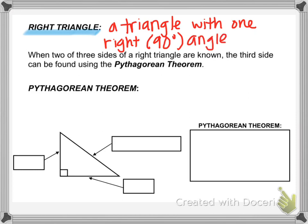The use of the Pythagorean Theorem is that it shows the relationship between the three sides of any right triangle. It's most used when you know the lengths of two of the three sides, and you're trying to find the length of the third side.